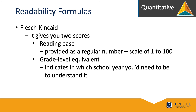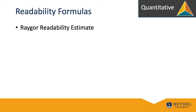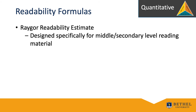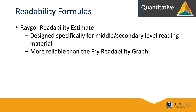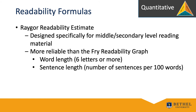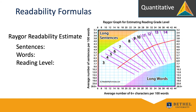For grade level 7, someone in 7th grade — or between 12 and 13 years old — could probably understand it. The Rager readability formula was devised by Alton Rager in 1977. He designed it specifically for middle and secondary level reading material. It has proven to be more reliable than the Fry readability graph, as it counts word length of six letters or more as opposed to syllables. It also takes into account the number of sentences involved in a chunk of writing that is 100 words long. Here's an example of the Rager readability estimate graph.